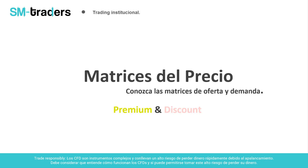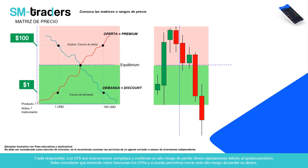Vamos a hablar de las matrices de precio, en este caso las zonas premium y zonas discount. En este esquema de oferta y demanda tenemos un eje de coordenadas donde vemos el precio y la cantidad. Hacia la derecha está el producto, activo o instrumento que se esté cotizando, y hacia arriba tenemos la valorización de ese activo o instrumento financiero.